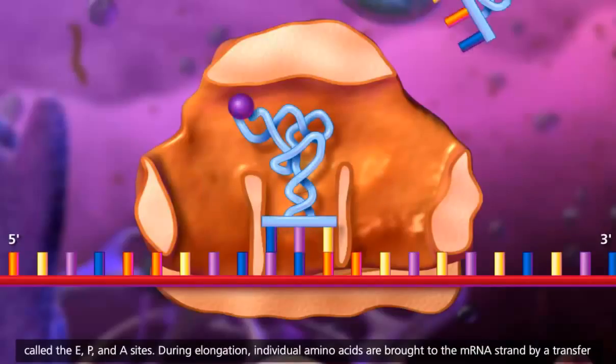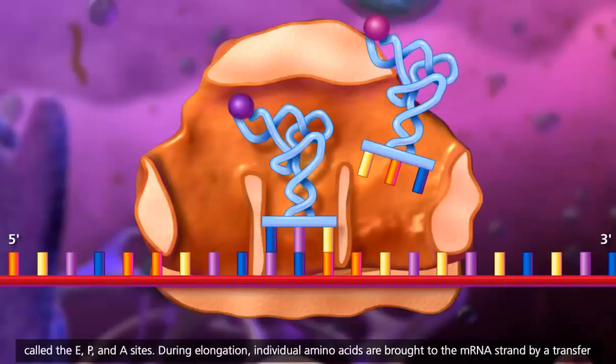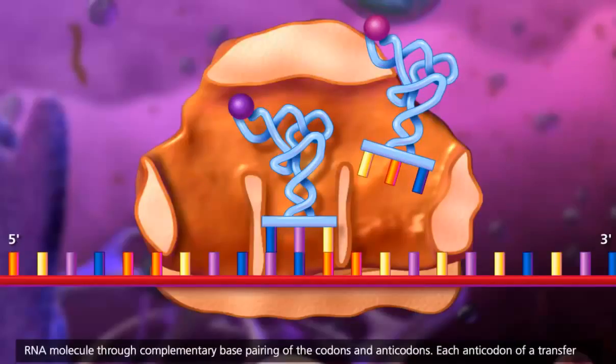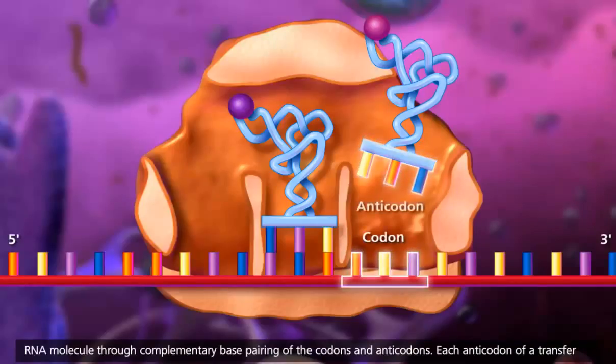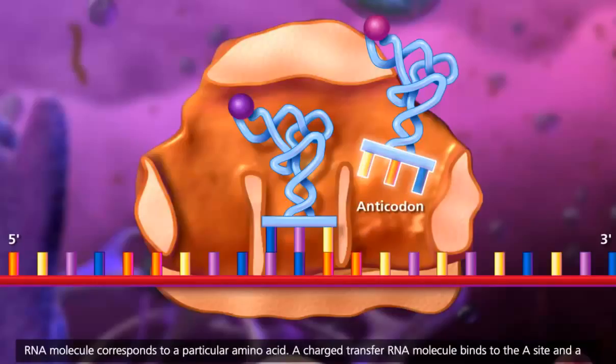During elongation, individual amino acids are brought to the messenger RNA strand by a transfer RNA molecule through complementary base pairing of the codons and anticodons. Each anticodon of a transfer RNA molecule corresponds to a particular amino acid.